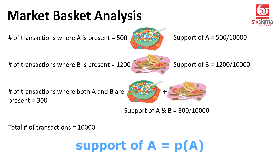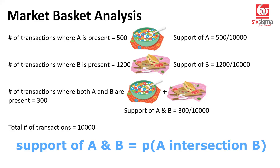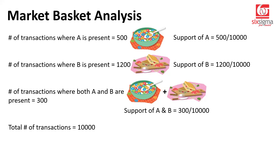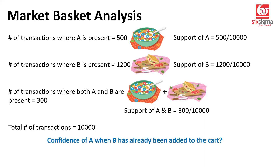Now, would it be fair to say that support of A is the same as the probability of A — the outcomes of interest divided by total transactions or sample space? Can I say support of B is the same as the probability of B? And can we say that support of A and B is nothing but the intersection of A and B? Because A and B both are present — if you can imagine the classic Venn diagram in your mind, this is the overlapping section between the two circles. This is probability. But that's not all — we've just got the base set up. So let's move ahead.